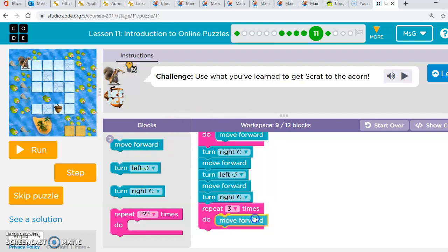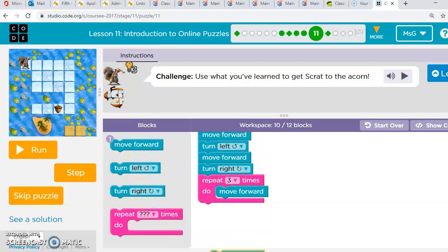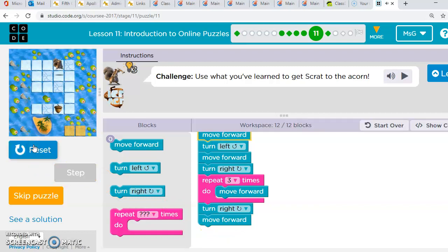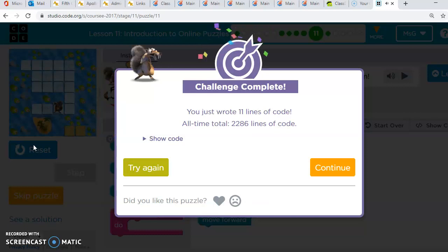Remember, using the pink repeat blocks helps you save on the number of blocks you need to use. Then a turn right, and a move forward. Let's see if Scrat can make it to the acorn with option A. Perfect! So since we know option A is the answer for puzzle three, we don't need to try option B.